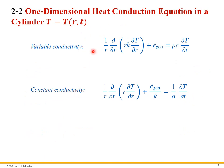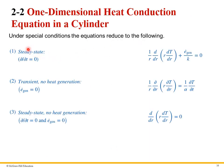For a cylinder, the same analysis yields an analogous equation where the right-hand side is identical and the equation is a function of r only. For constant k, we factor it outside and divide through. We can again break it into three special cases: steady-state only (right-hand side zero), transient with no heat generation (e-gen zero), or both steady-state and no heat generation.